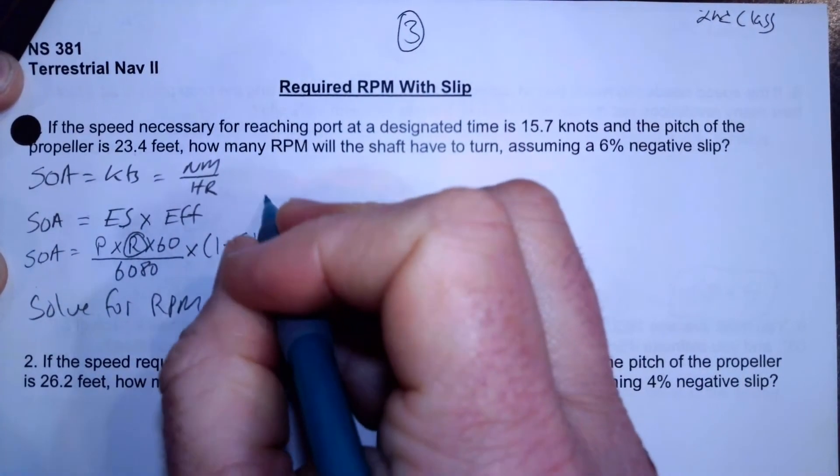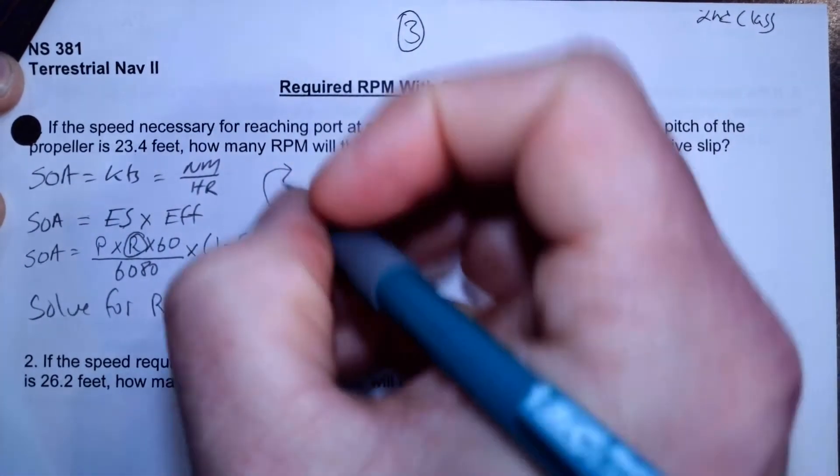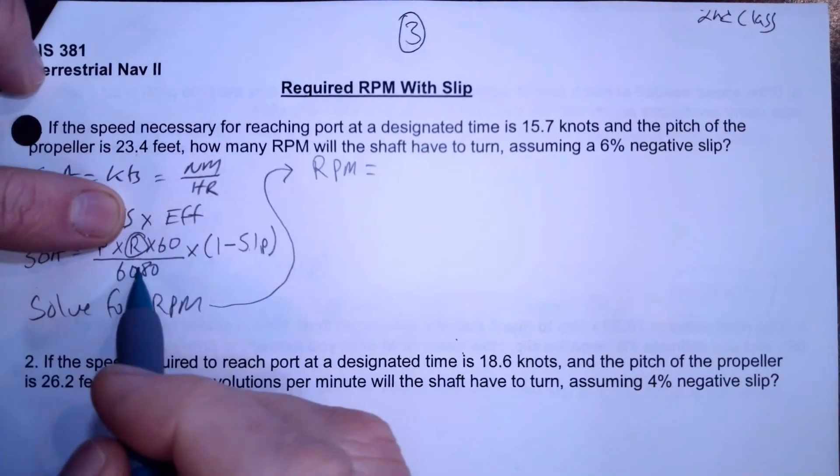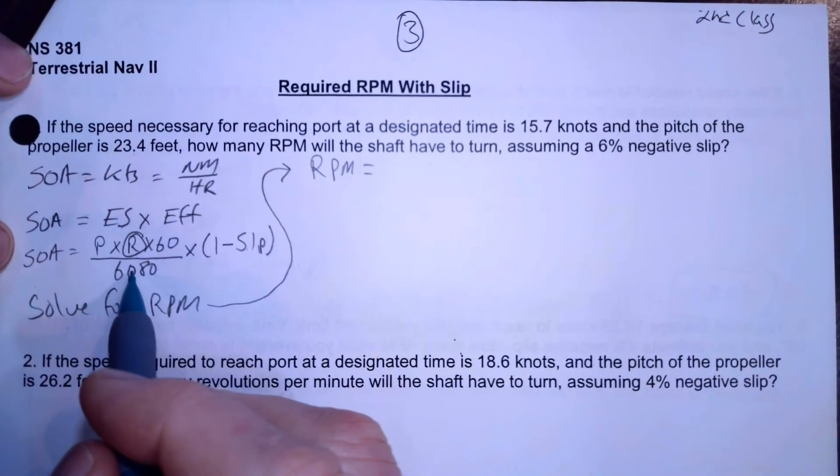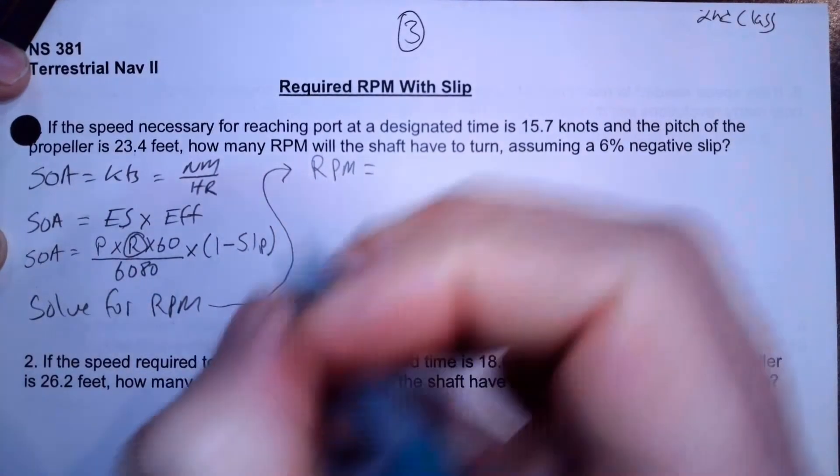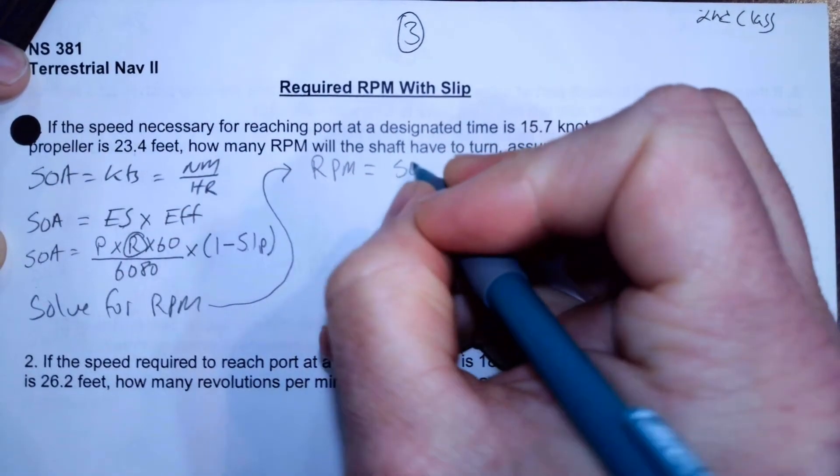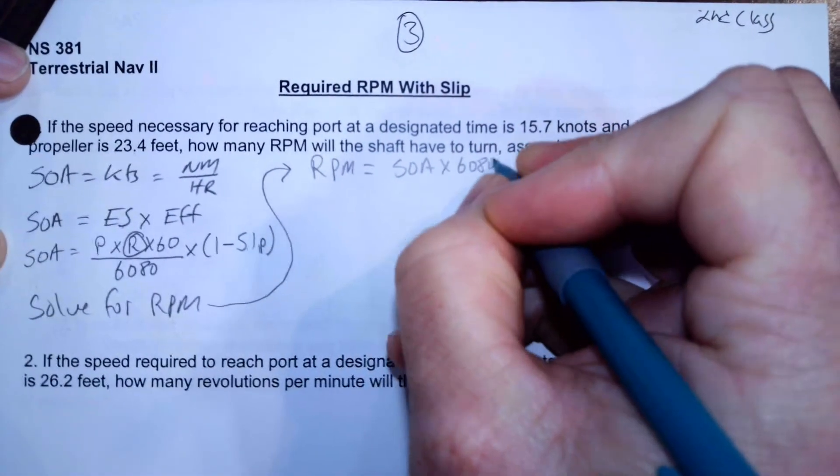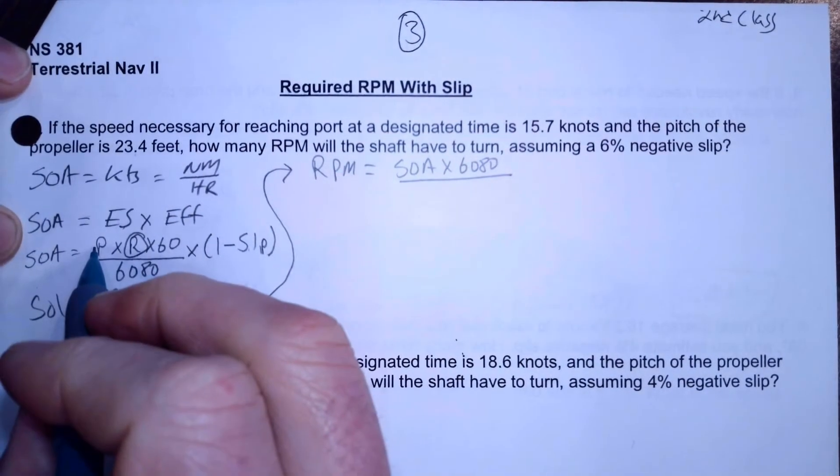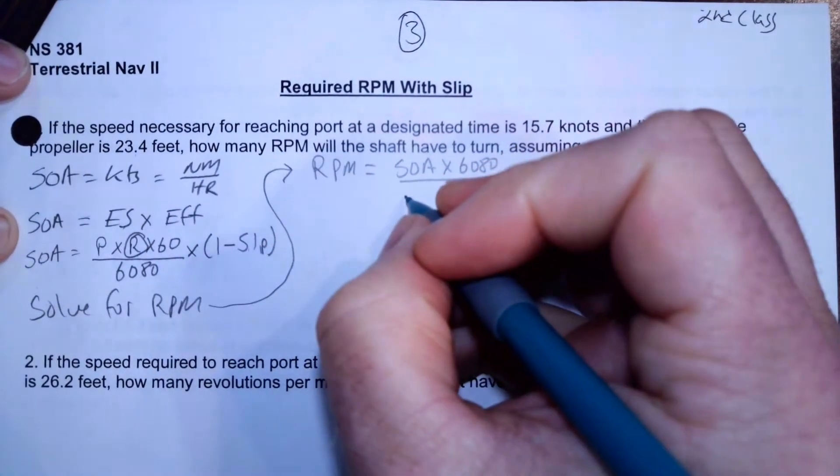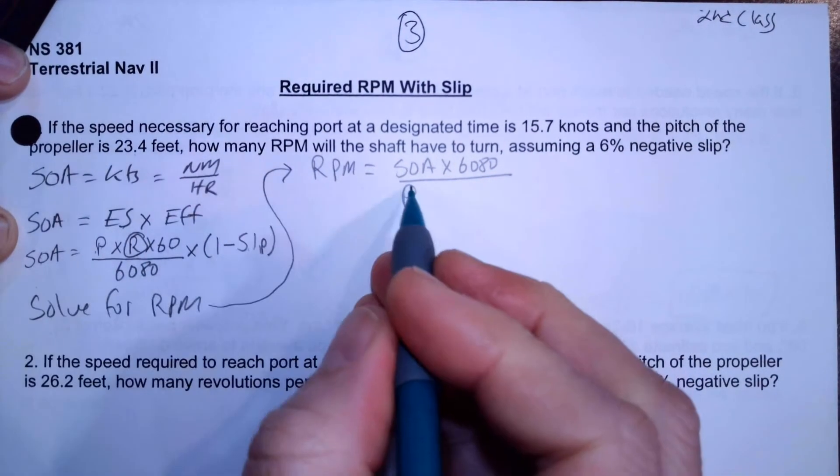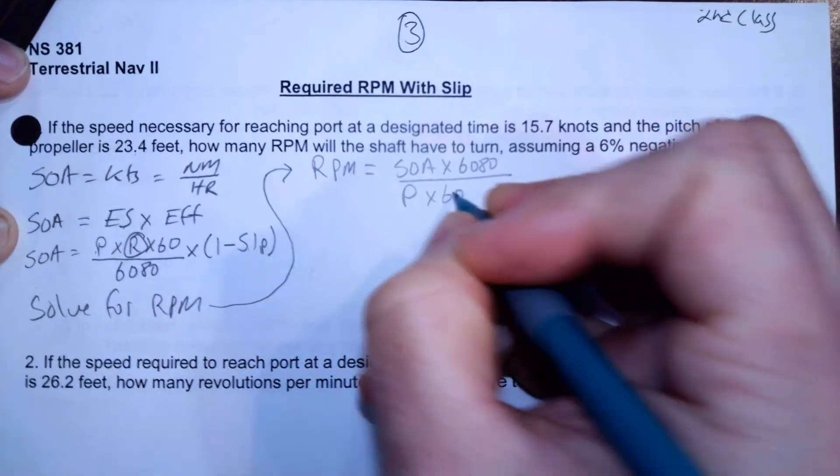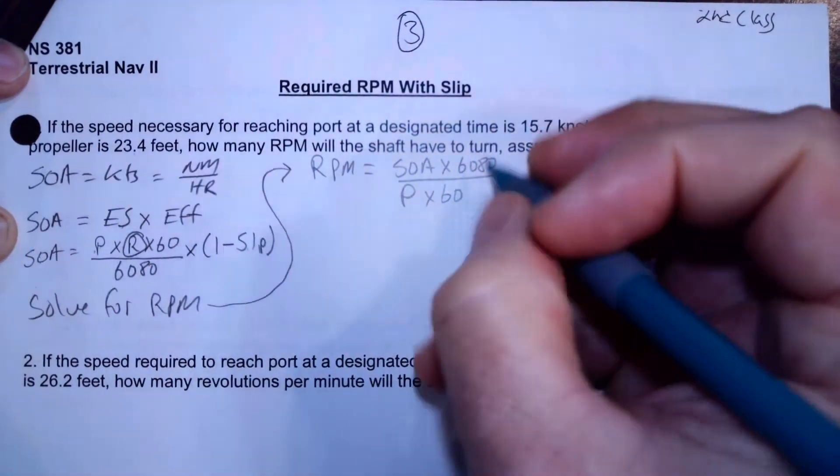So I'm going to do that up here. I'm going to want this to start off with RPM equals. So RPM is going to equal, so I got to get this 6080 out of here. So I'm going to start off with RPM is speed of advance times both sides by 6080. That got rid of the 6080. Now I got to divide both sides by pitch. That gets rid of the pitch on this side. It pops up on this side. I got to divide both sides by 60.